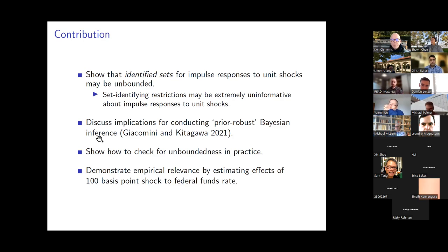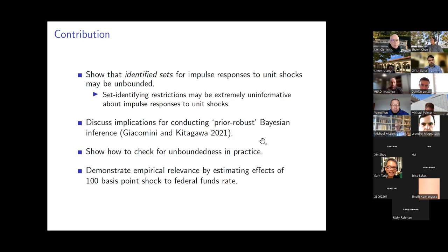The second contribution is discussing implications of this unboundedness for conducting prior-robust Bayesian inference, as proposed by Giacomini and Kitagawa in Econometrica. This approach is a natural focus because it combines features of Bayesian inference with an approach to eliminating the prior sensitivity issue. Similar issues arise in frequentist settings, but few papers in the literature do frequentist inference in set-identified models, so the focus is on this robust Bayesian approach.